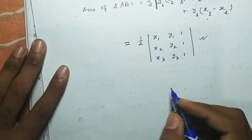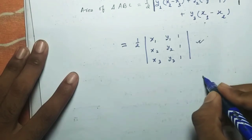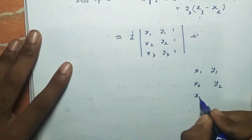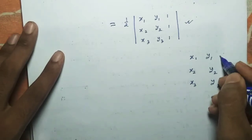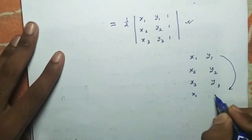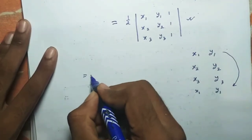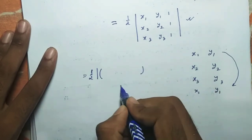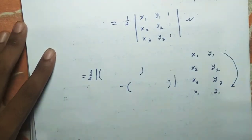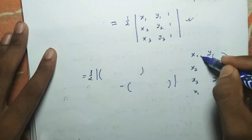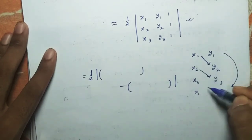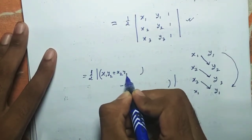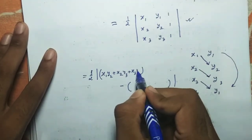We will use another form of this area formula which is very easy. Write down the three coordinates — (x1, y1), (x2, y2), (x3, y3) — and then write the first coordinate again at the end: (x1, y1). Then apply half times the modulus of: the first bracket (x1·y2 + x2·y3 + x3·y1) minus the second bracket.